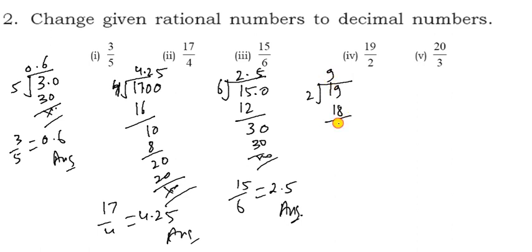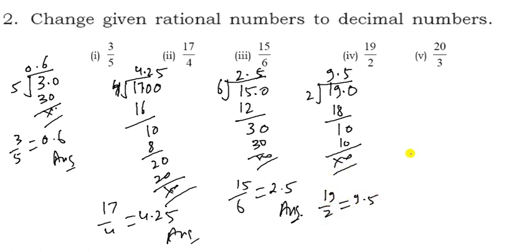For 19 divided by 2: two 9s are 18, remainder 1. Place the decimal, bring down 0. Two 5s are 10. So 19 by 2 = 9.5.